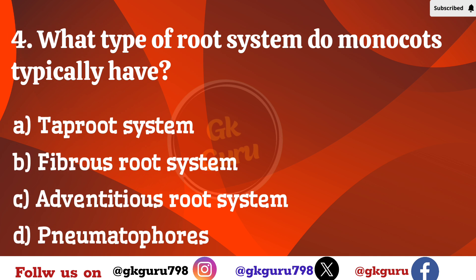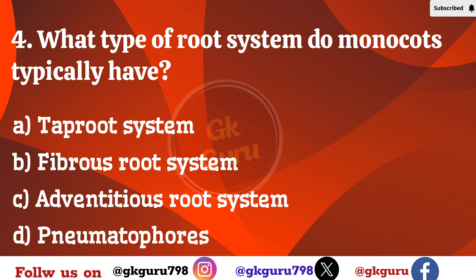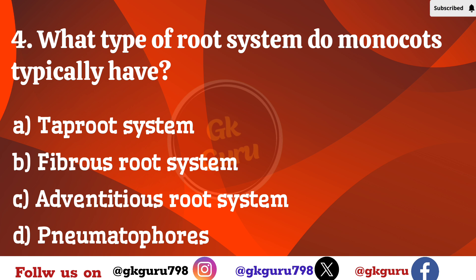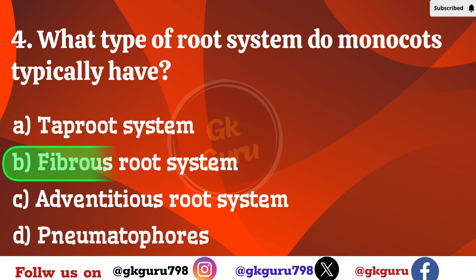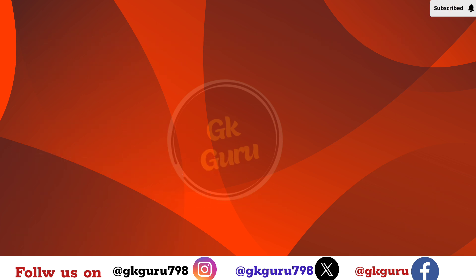Fourth question: What type of root system do monocots typically have? Option A: tap root system. Option B: fibrous root system. Option C: adventitious root system. Option D: none of the above. Correct answer: Option B, fibrous root system.